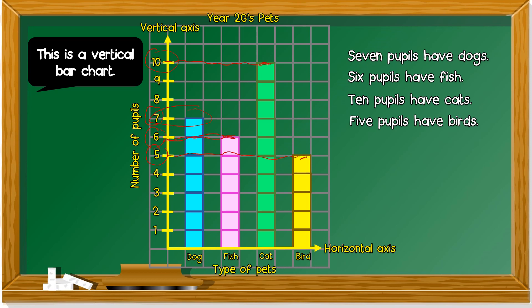Thirteen plus how many cats? Ten cat becomes 23. 23 plus how many birds has five pupils? So 28. There are 28 pupils in year 2G.